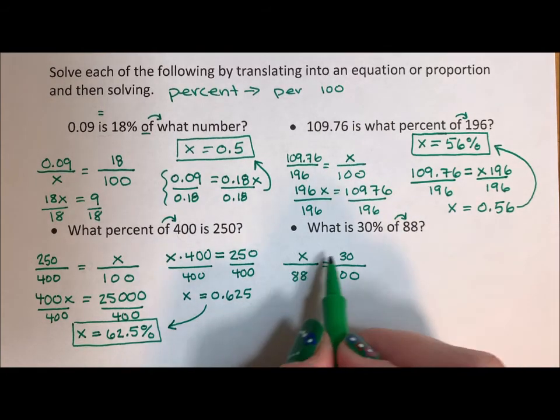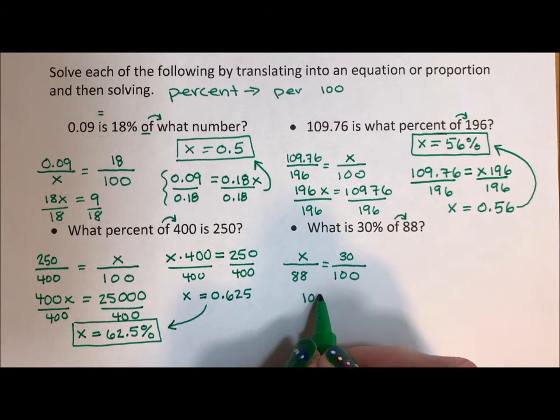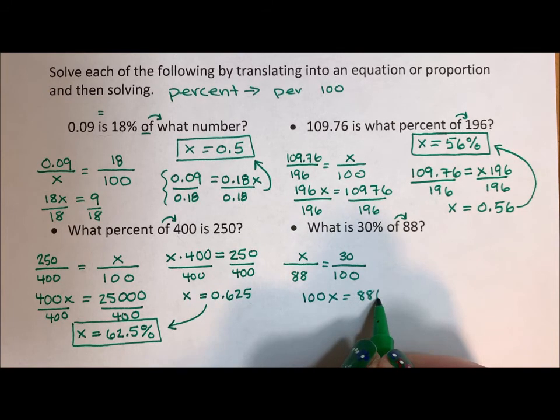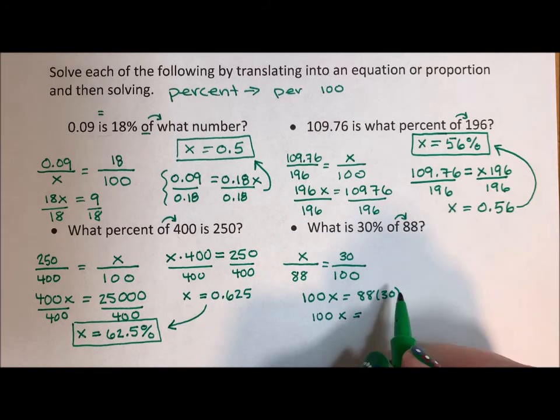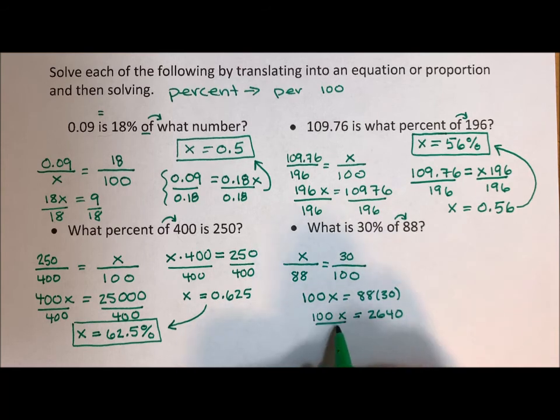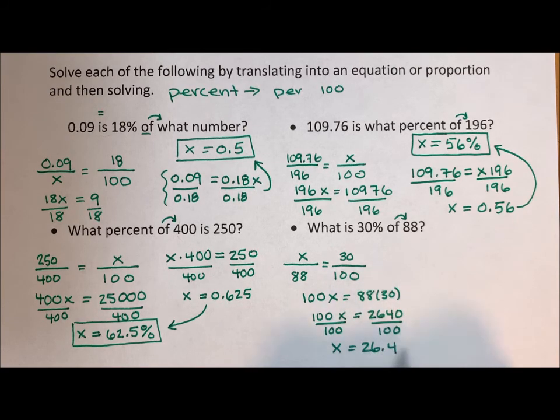Cross-multiply. 100X is equal to 88 times 30. 100X is equal to 2,640. Divide by 100. And X is equal to 26.4.